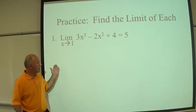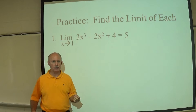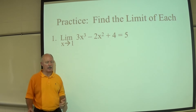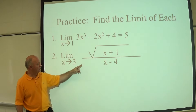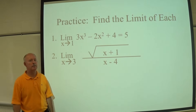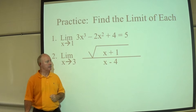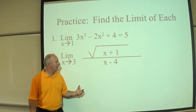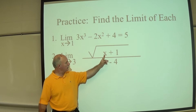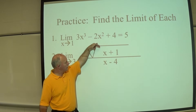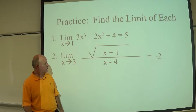Try the next one: the limit as X approaches 3 of the square root of X plus 1 over X minus 4. Pause and get your answer. Substituting 3 in for X: 3 plus 1 is 4, and the square root of 4 is 2, over 3 minus 4 which is negative 1. So the answer is 2 over negative 1, which is negative 2.